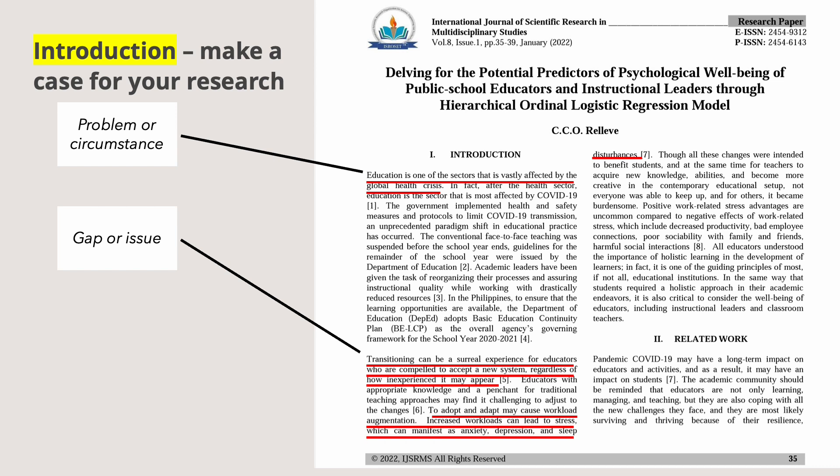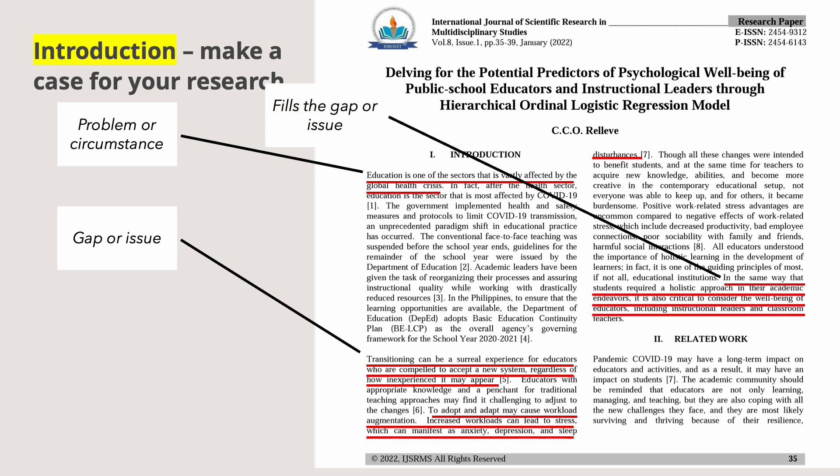We also need to introduce a gap or issue in the field before talking about the present state of research in the area. In this example journal, the issue is about the transition that introduces a new system in education, educators being compelled to accept it, and how the adoption of it may affect their psychological well-being. Finally, describe how the current study fills that gap — in this journal, it's about consideration of the well-being of the respondents. If the study has hypotheses, they are presented at the end of the introduction; qualitative studies typically do not have hypotheses.